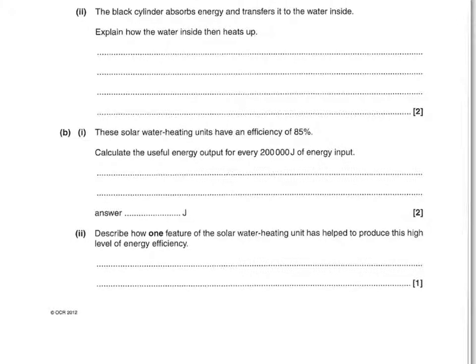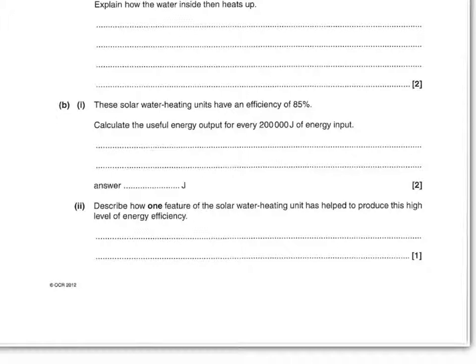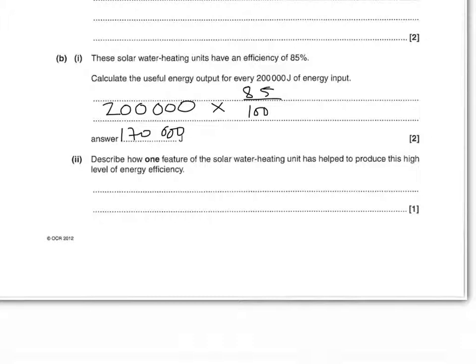These solar water heating units have an efficiency of 85%. Calculate the useful energy output for every 200,000 joules of energy input. The efficiency equation says efficiency equals useful energy divided by total energy input. To work out useful energy: 200,000 × (85/100) = 170,000 joules. Describe one feature of the solar water heating unit that helps produce this high level of efficiency. Any one of: the double-glazed top traps air, reduces convection, or is a good insulator; the black surface is a good absorber of radiation; or the shiny surface reflects radiation back in.